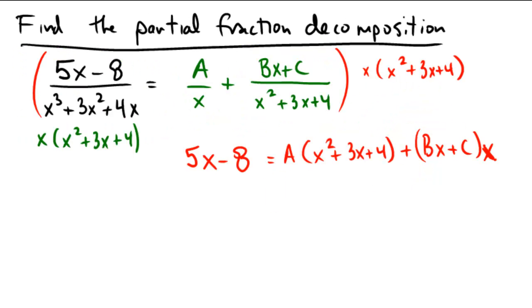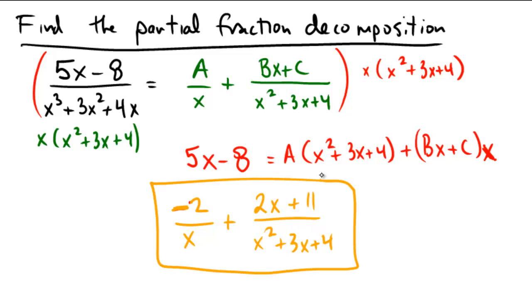we're going to have an answer of negative 2 over x plus B was 2x and C was 11, and that's over the quantity x squared plus 3x plus 4. And that's our partial fraction decomposition.